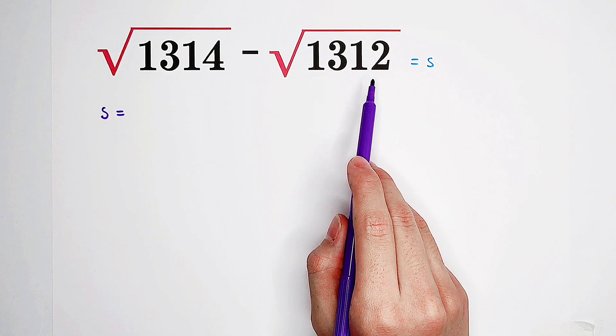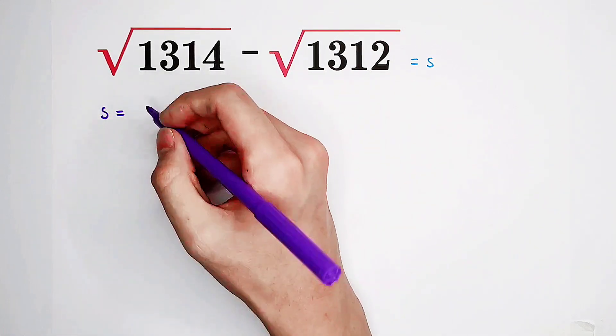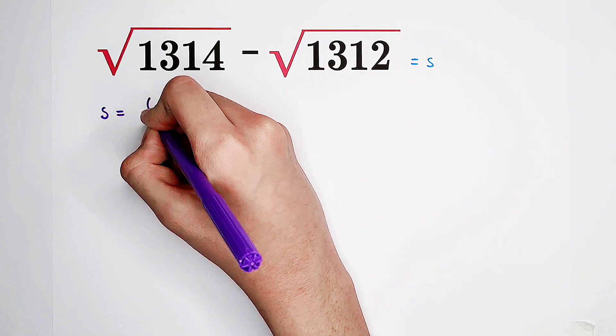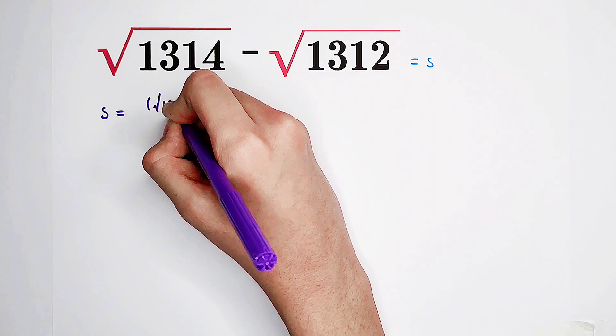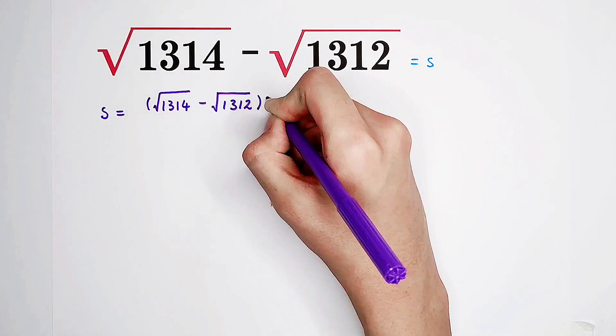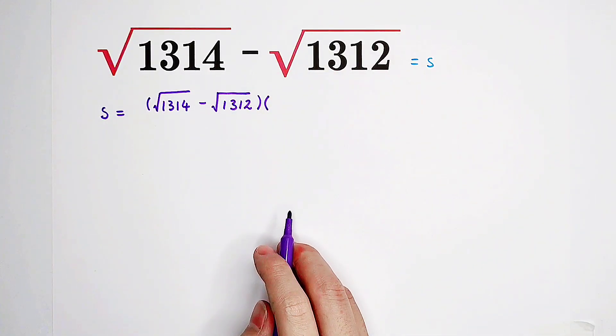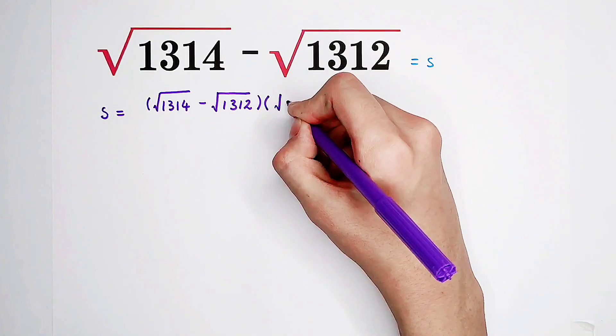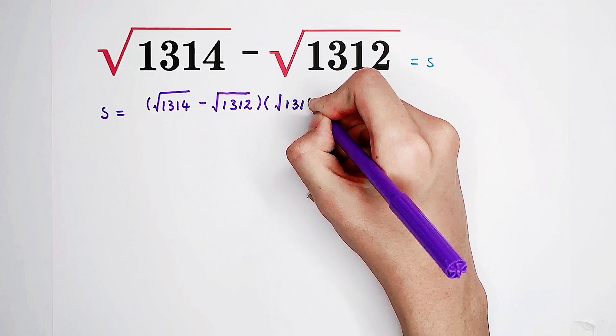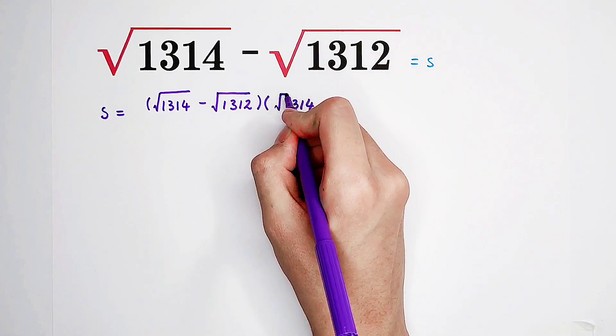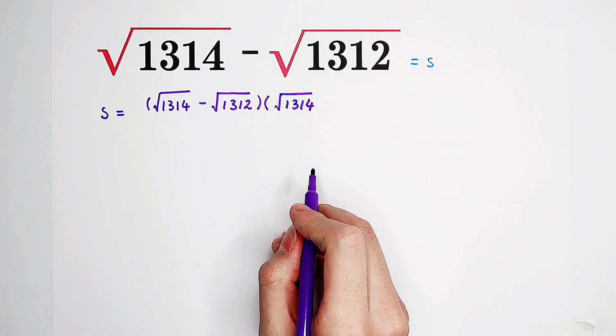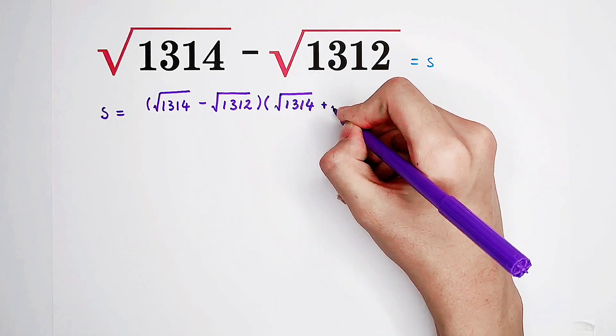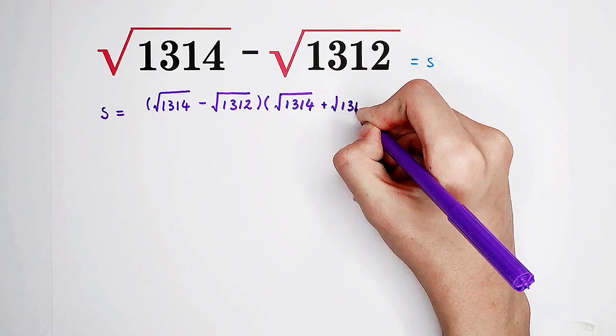And what shall we do? Write this guy. I copied here. And multiply this guy times its conjugate form. And it's square root of this, plus square root of this.